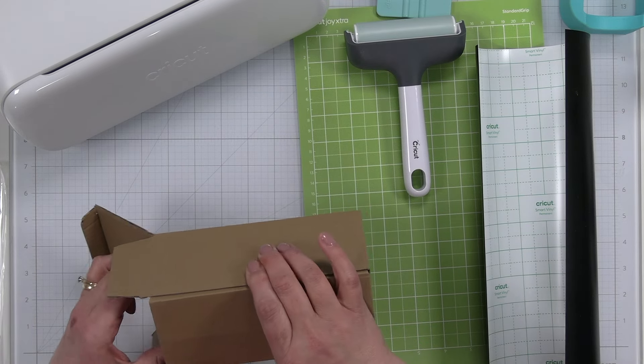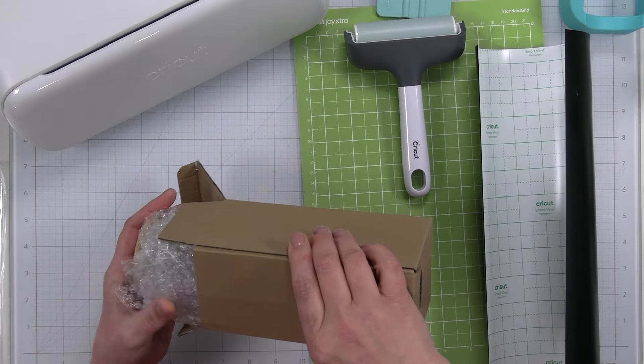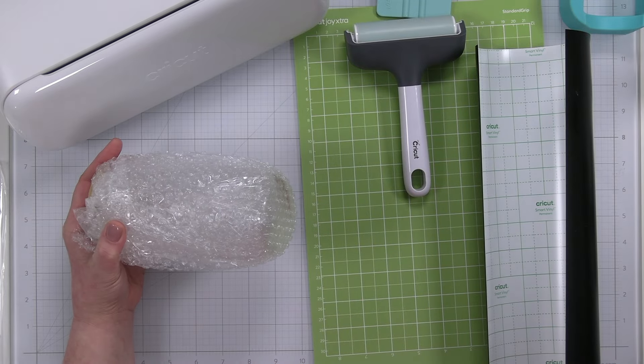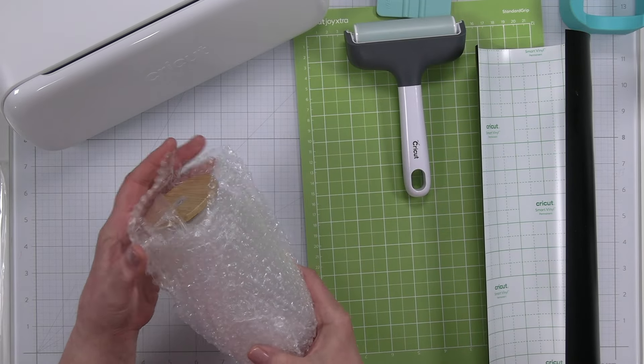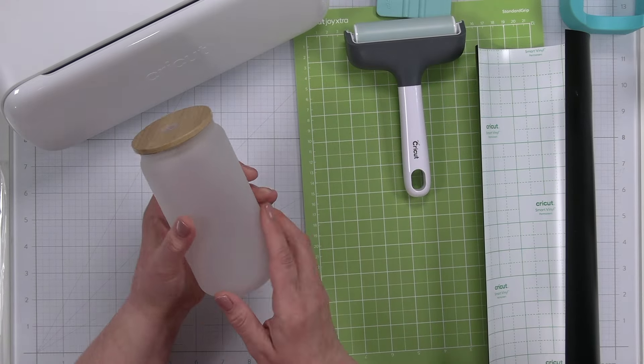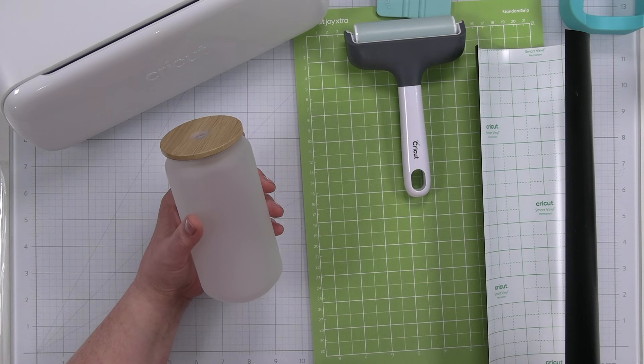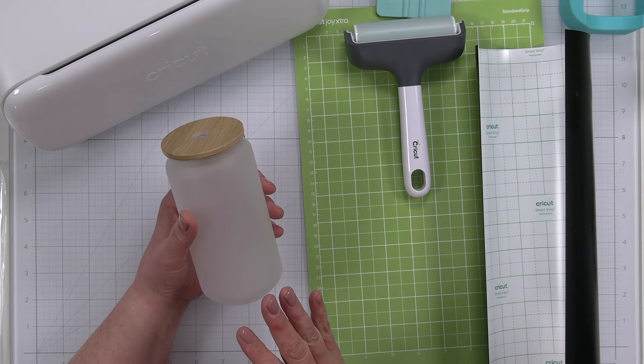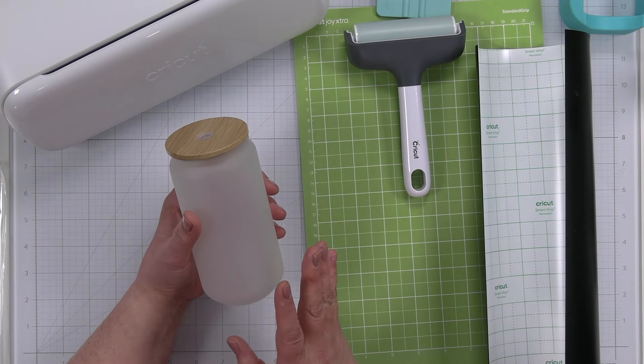I have these frosted tumblers, which actually this particular tumbler can be used for sublimation if I wanted to print onto it. But we're going to use it for vinyl today because I know not all of you have the ability to do the sublimation process. So I thought doing a vinyl project would be a lot of fun.